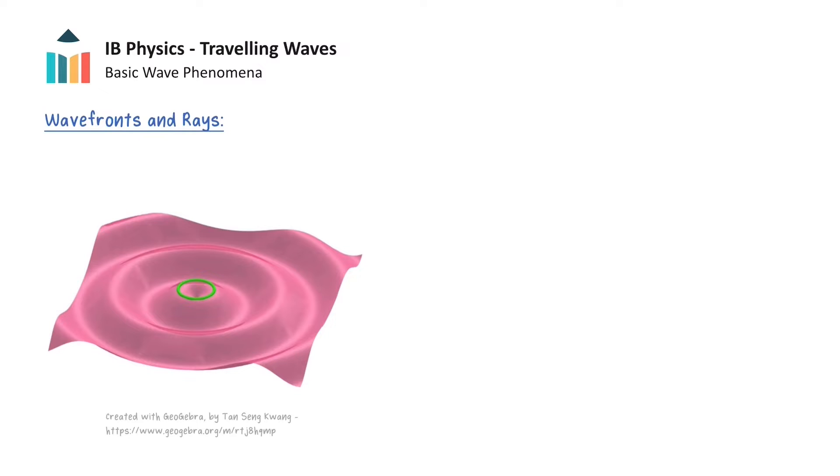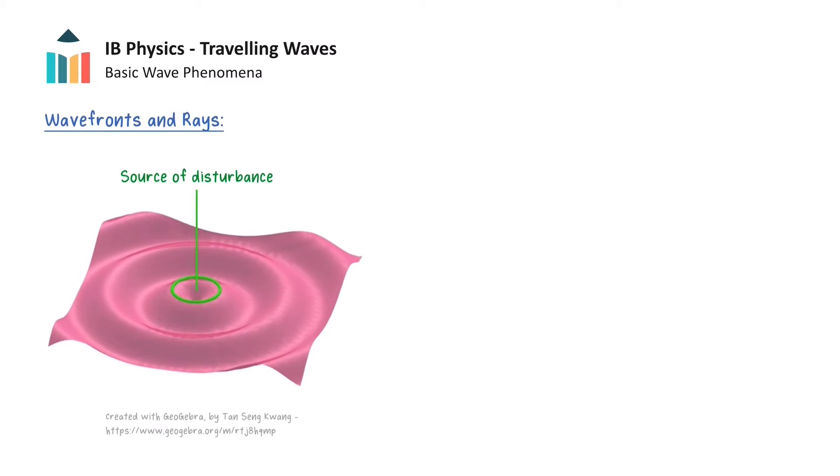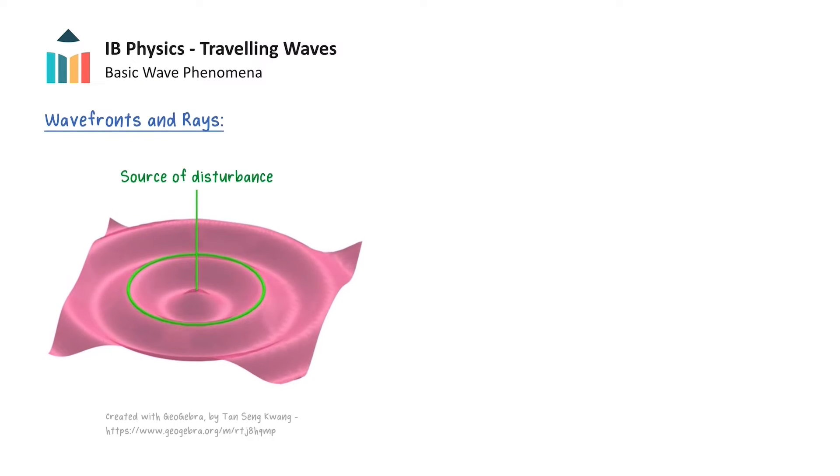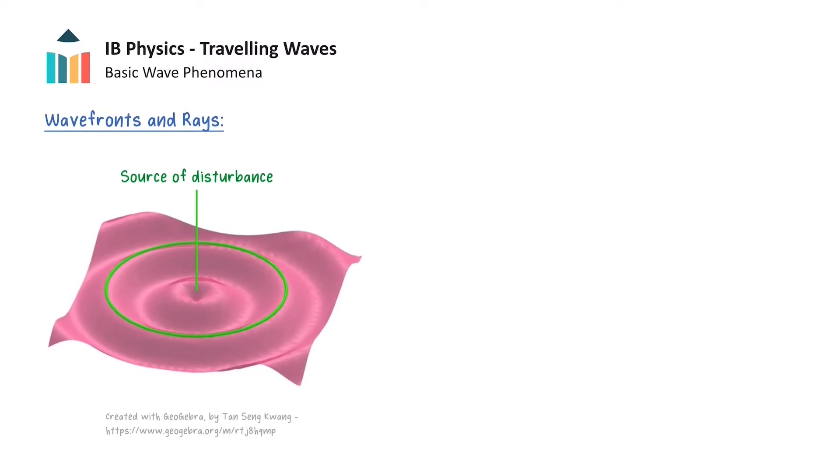To introduce wavefronts and rays, let's imagine that we have a pool of water and then we drop a stone into the pool at this point here. When the stone reaches the water surface, the stone will produce waves that will radiate out across the water surface from the point of impact as shown in this animation.